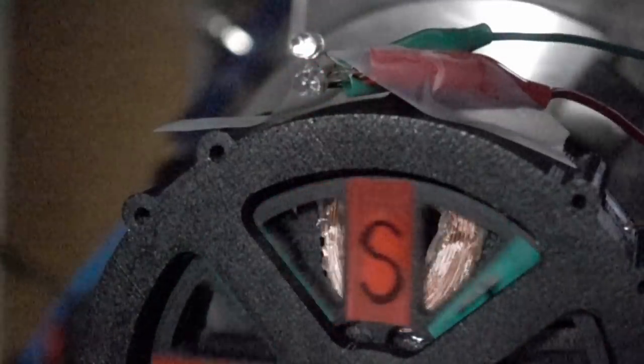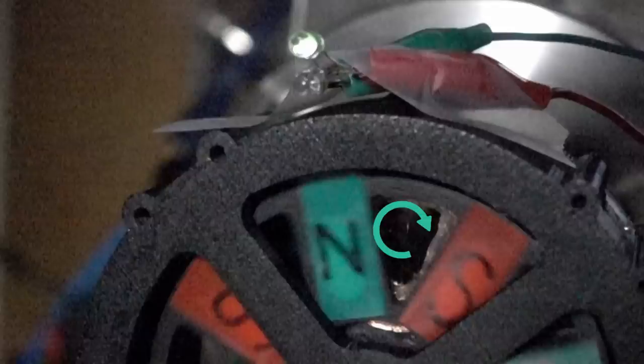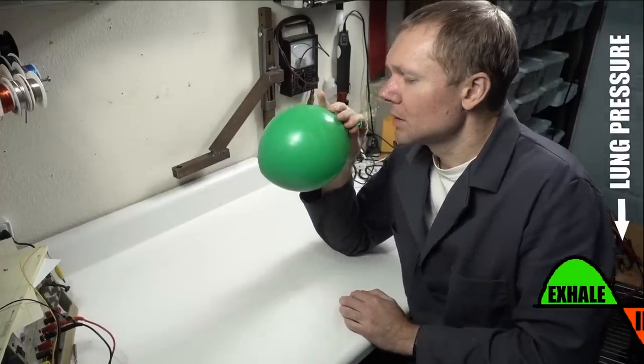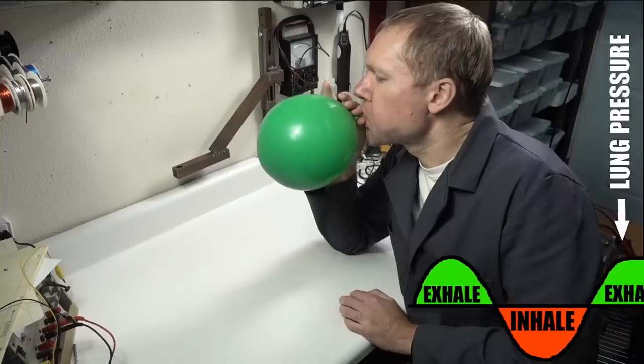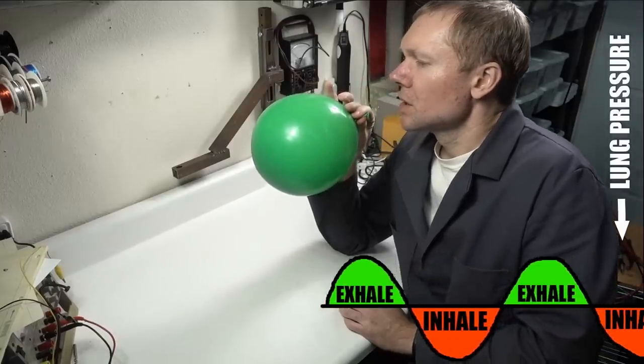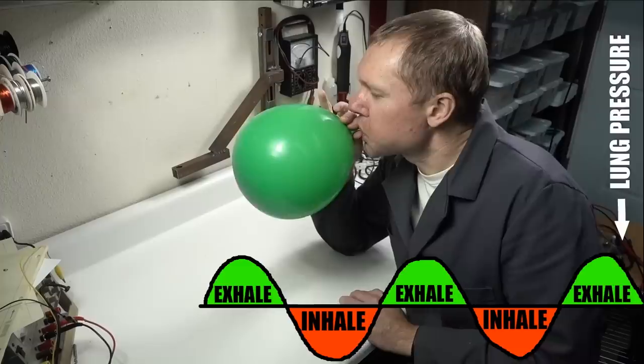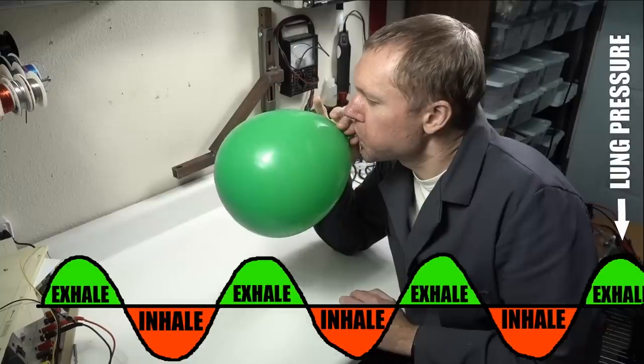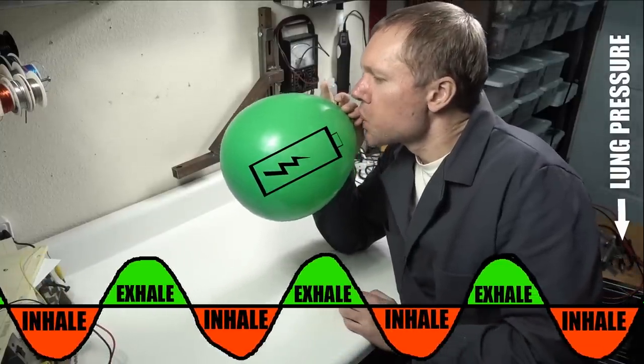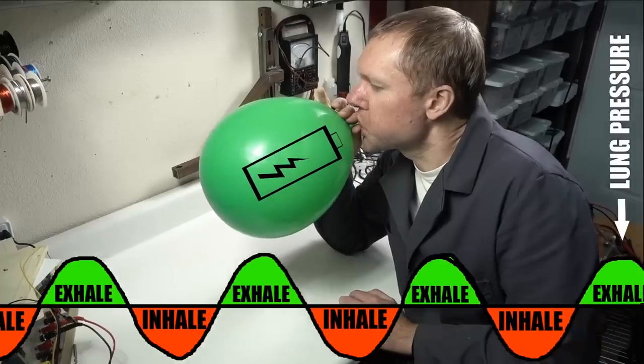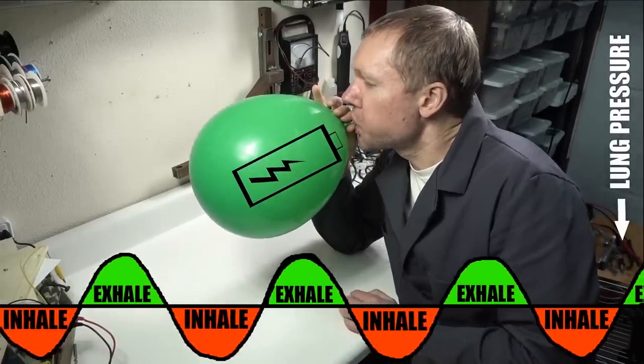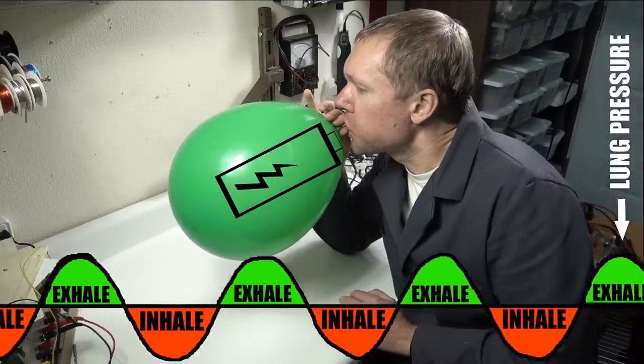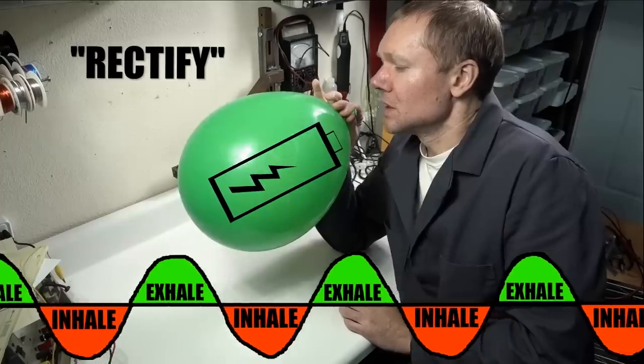The question is, will this alternating current work to charge a battery? Blowing up a balloon requires air moving in only one direction. To take a breath we pinch the balloon to keep air from coming back out. That way our lungs that alternate between inhaling and exhaling can be used to charge the balloon with air. Well, batteries are just like the balloon. In order to charge them we need electricity that moves in one direction.